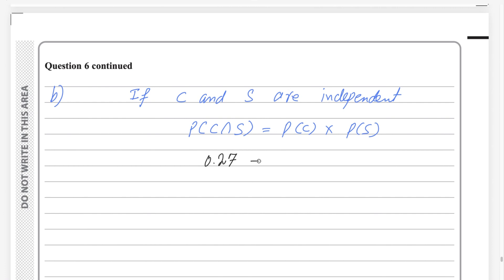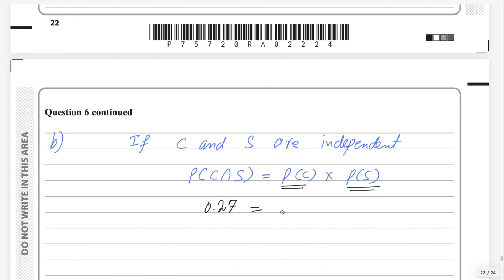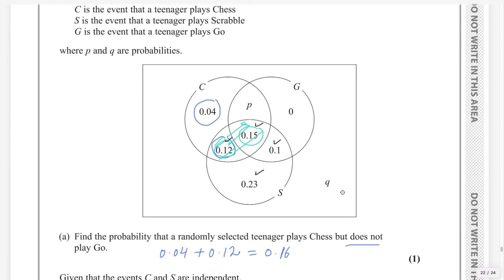So, on the left side, C intersection S equals 0.27. Now, you need to find the probability of C and probability of S as well. For probability of S, you have to add all four probabilities in S, and we get 0.6. For probability of C, keeping P as is and adding three probabilities — 0.04 plus 0.12 plus 0.15 — we get 0.31. So, probability of C will be P plus 0.31.